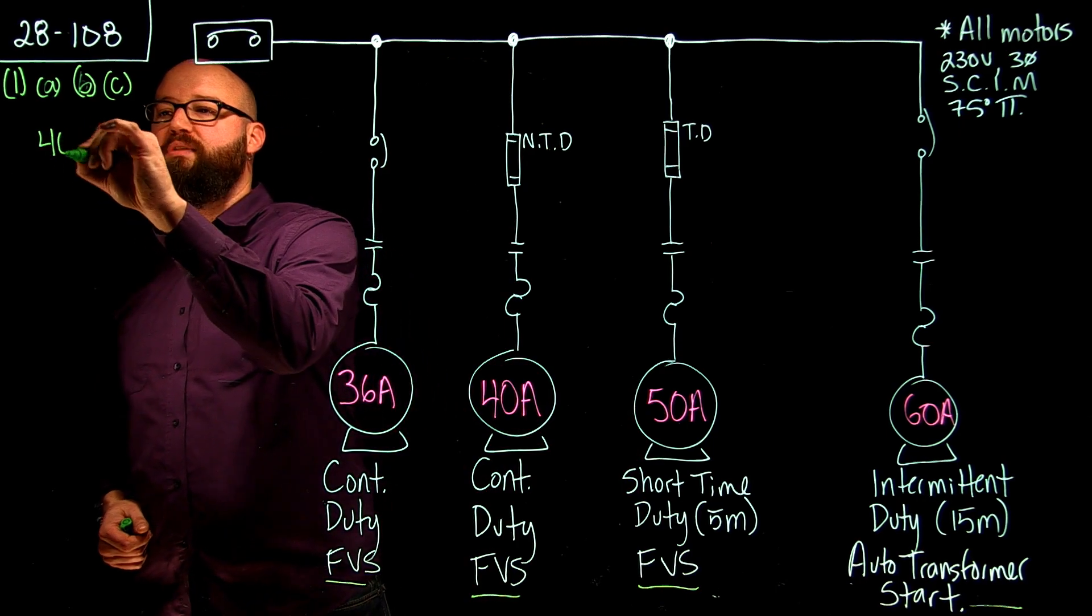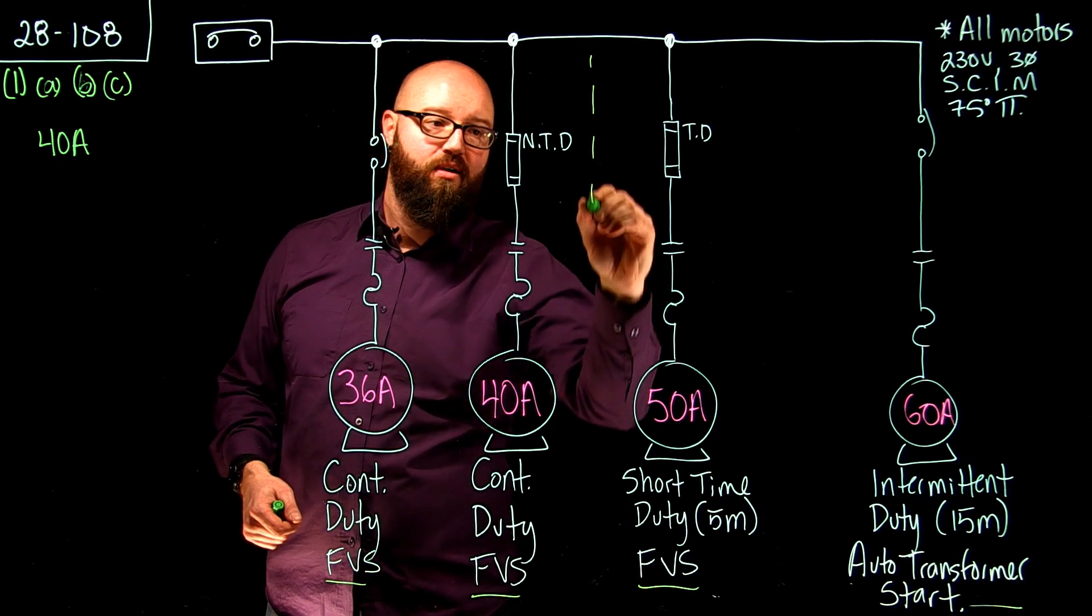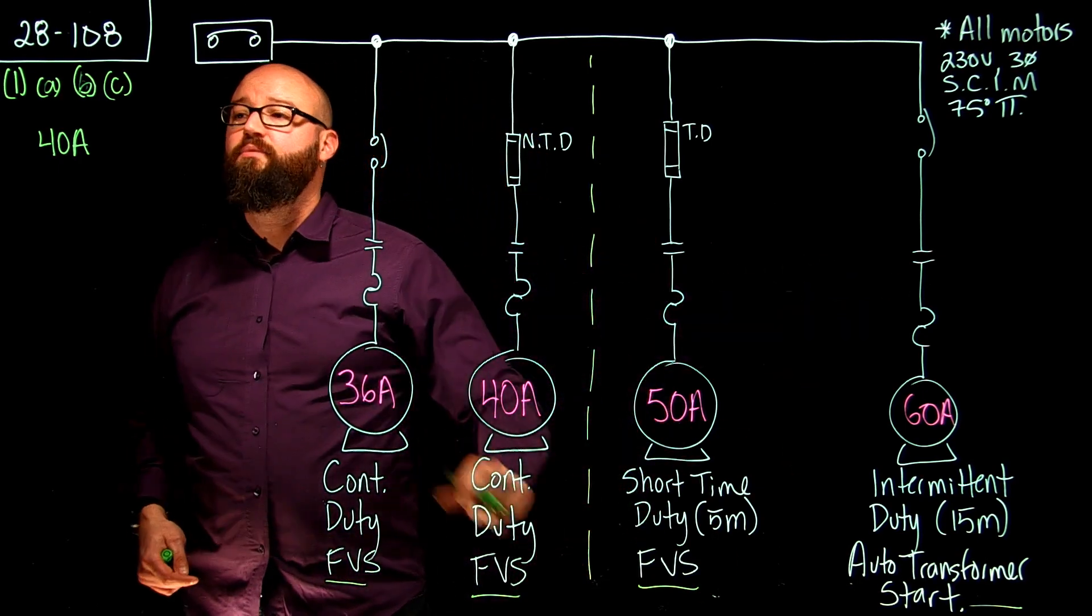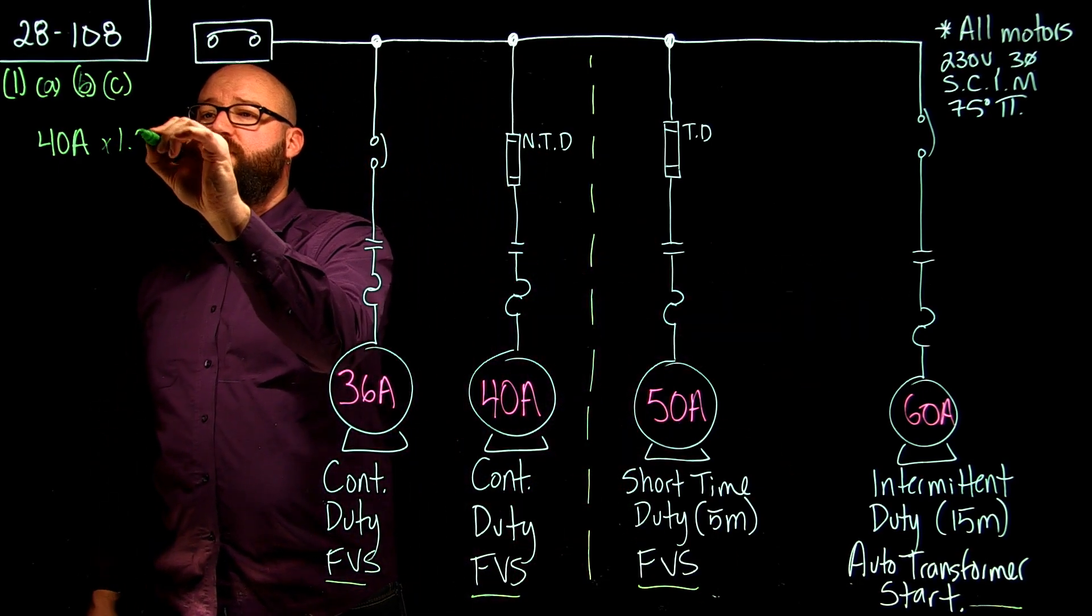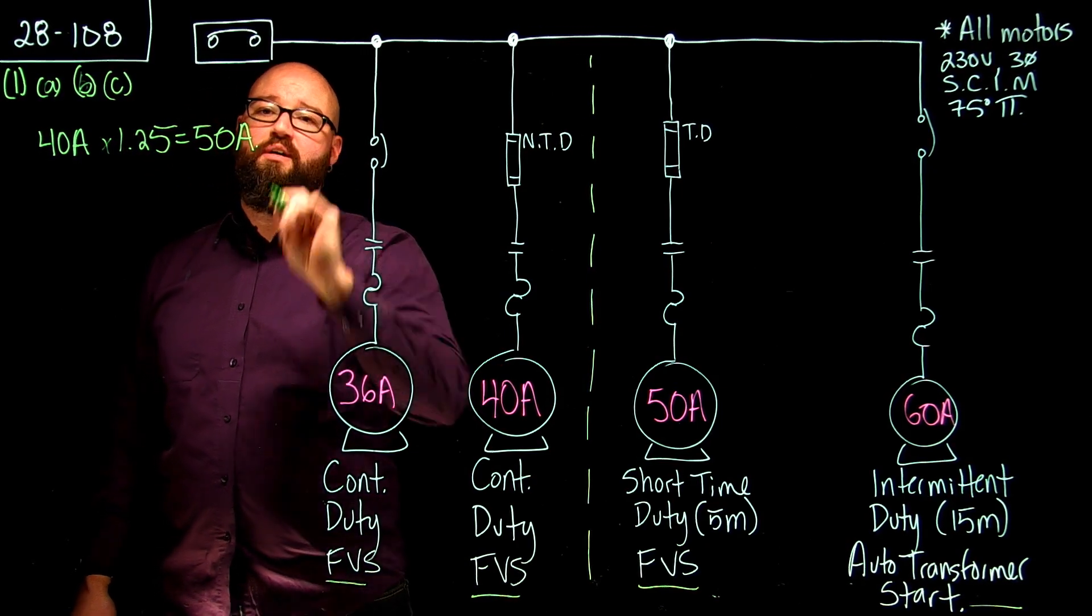We have 40 amps is our highest FLA that is continuous. We're not going to worry about these ones just yet. So 40 amps times 1.25 is 50 amps.